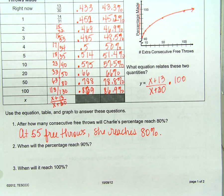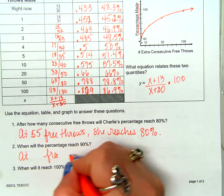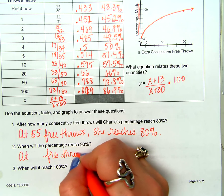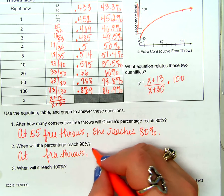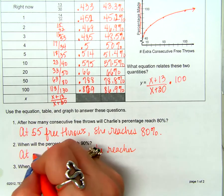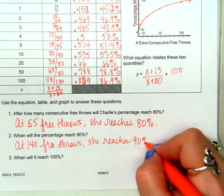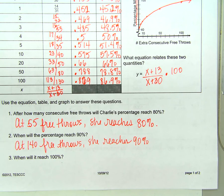Awesome. When will it reach 90%? At 140 free throws, she reaches 90%. Is it exactly 90%? Yes.